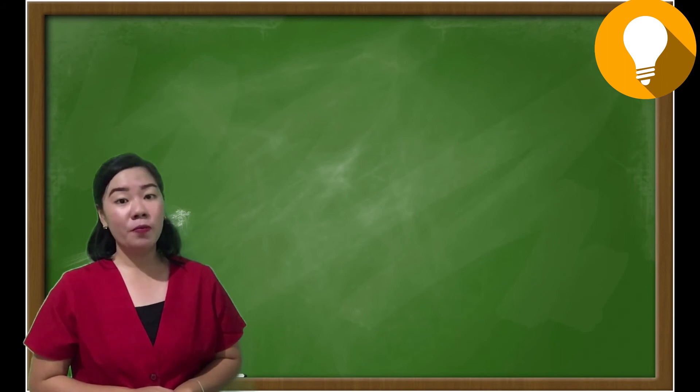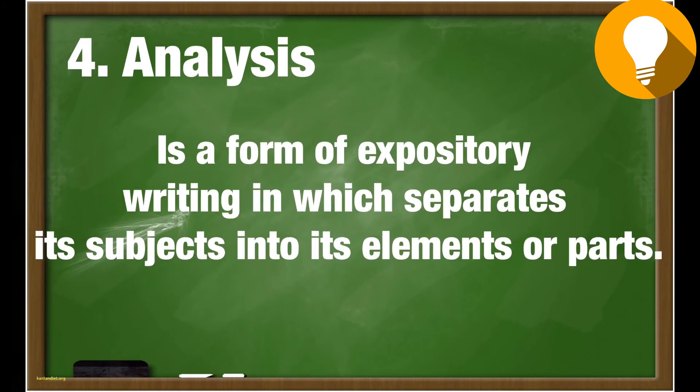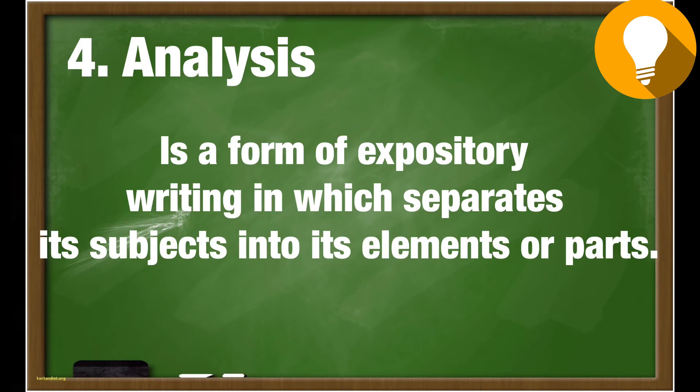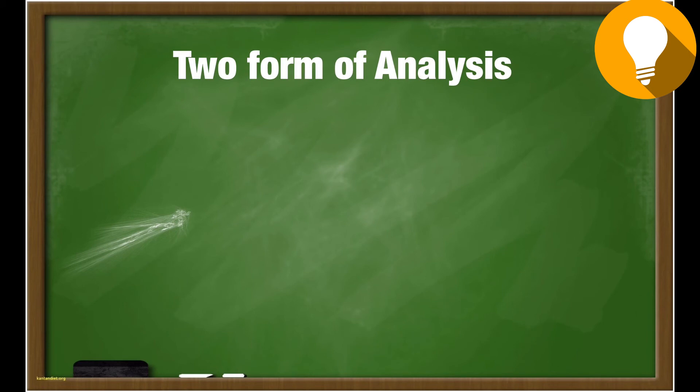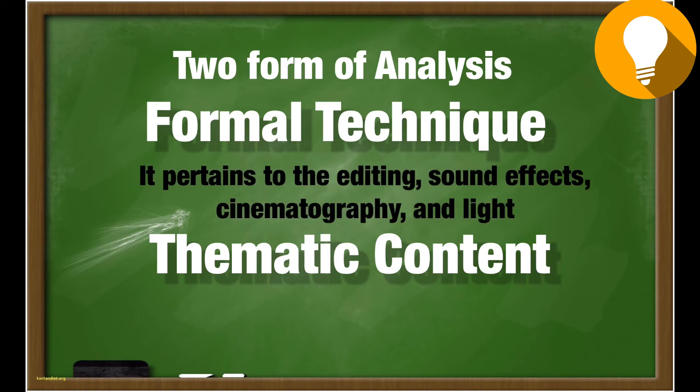The fourth part in writing a film review is analysis. Analysis is a form of expository writing which separates a subject into its elements or parts. Two forms of analysis: formal technique and thematic content. Formal technique pertains to the technicality of a movie.